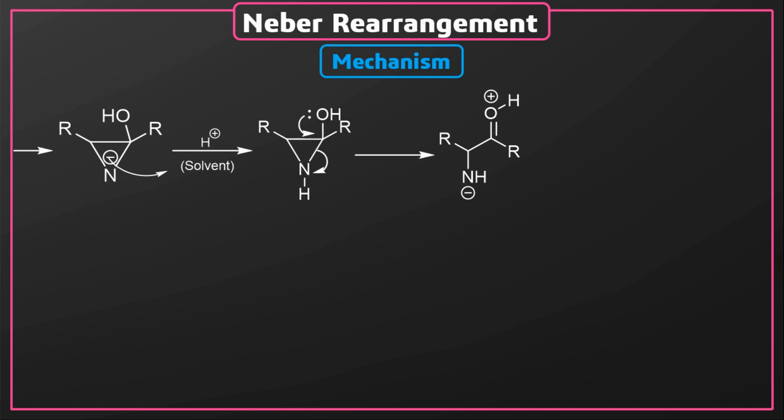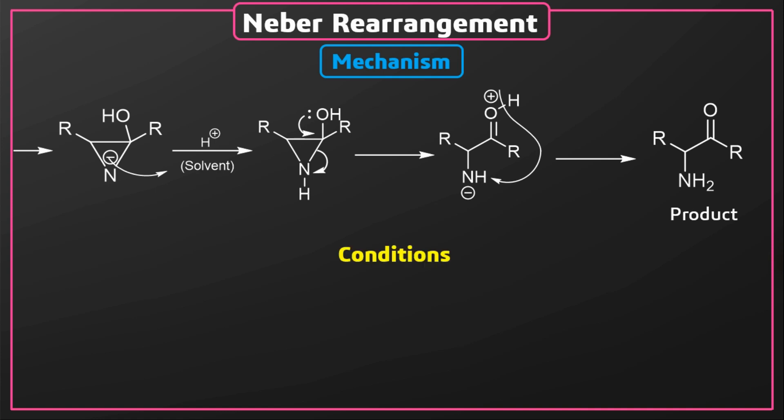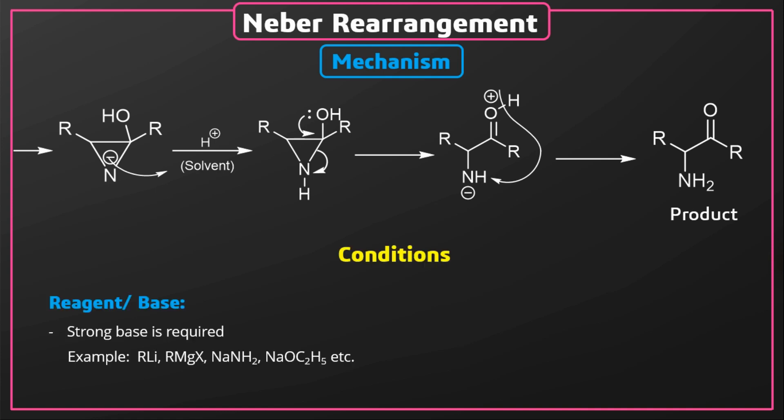This intermediate is formed, and a proton shift takes place from the protonated carbonyl to the negatively charged amine. The final product, alpha amino ketones, are formed. The conditions required for the reaction: a strong base is required.